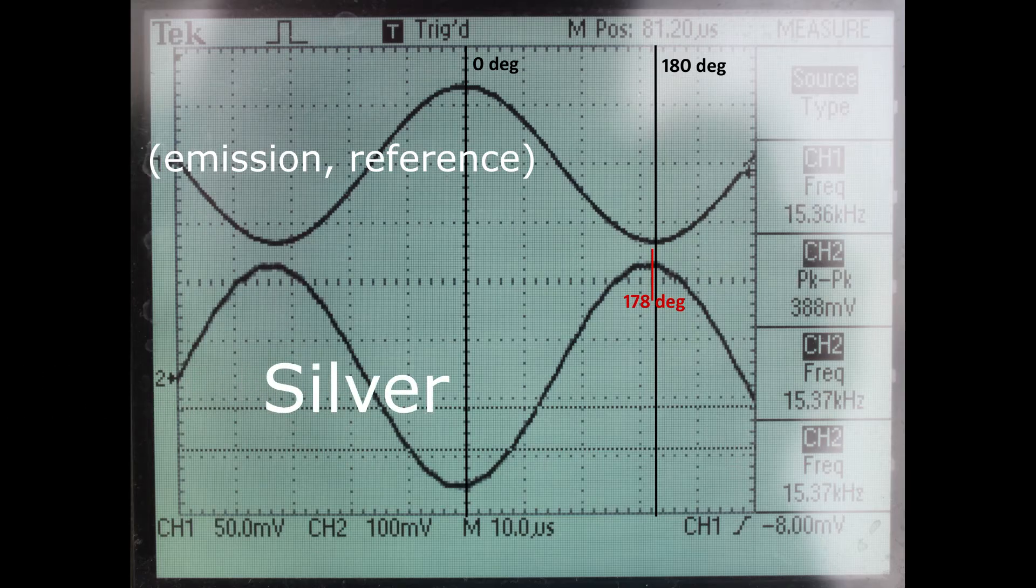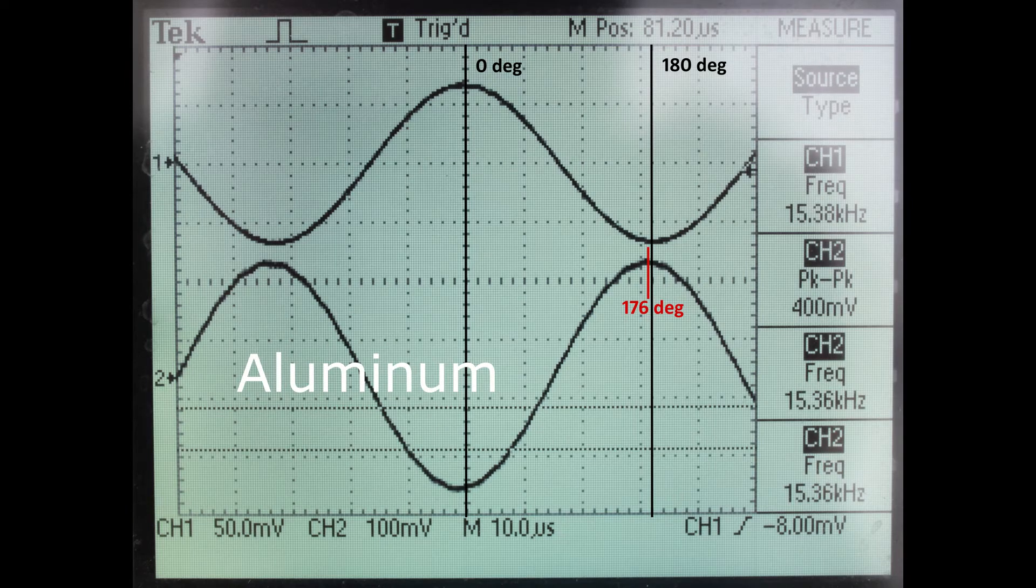Starting with silver, a phase shift of nearly 180 degrees is observed with respect to the original magnetic field. Next is the aluminum block and it also displays a very large phase shift. I measured it to be only slightly smaller than the silver, so 176 degrees.